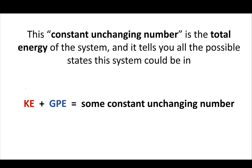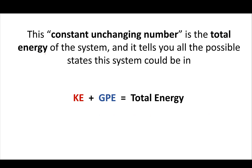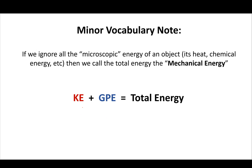This constant unchanging number is called the total energy of a system, and it tells you all the possible states the system could be in. So the total energy equals the gravitational energy plus the kinetic energy, if we ignore other types. As a vocabulary note, we're ignoring all the microscopic energy of an object — like its heat, chemical energy, etc. — so technically this is the total mechanical energy, which is kinetic energy plus potential energy.